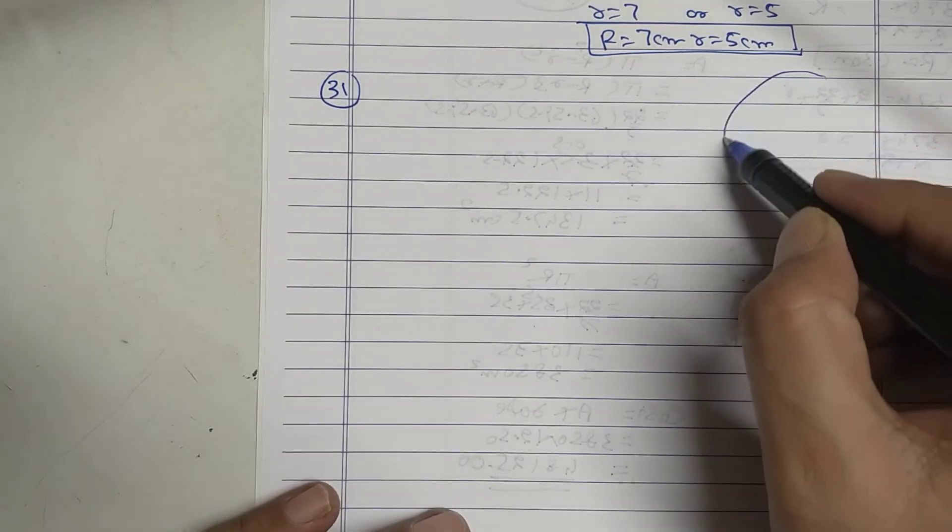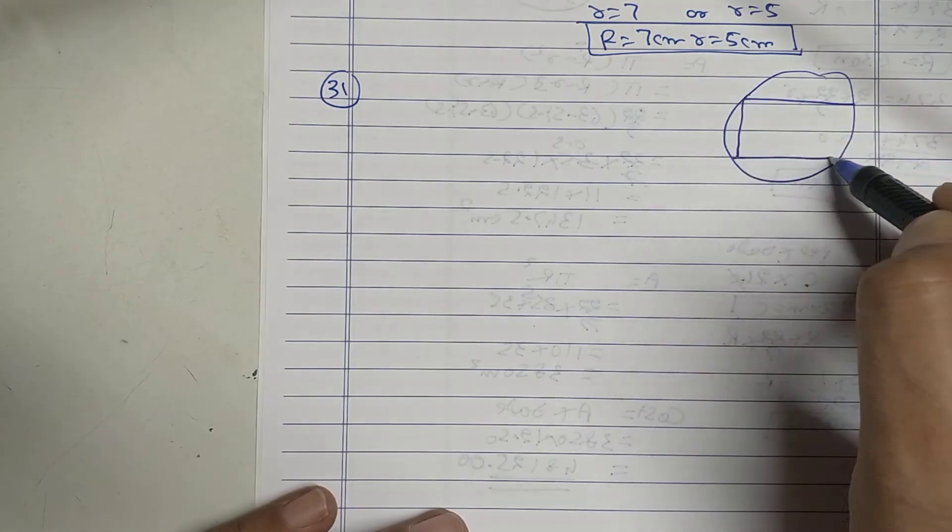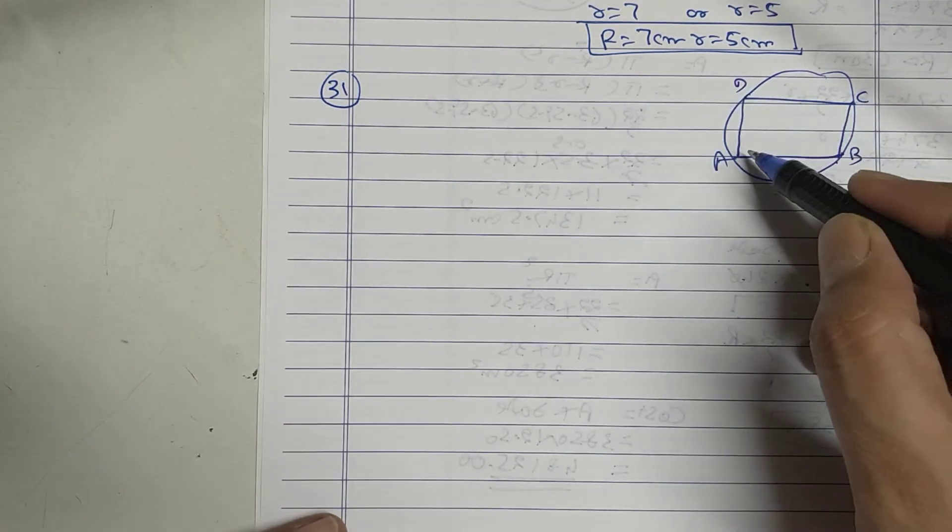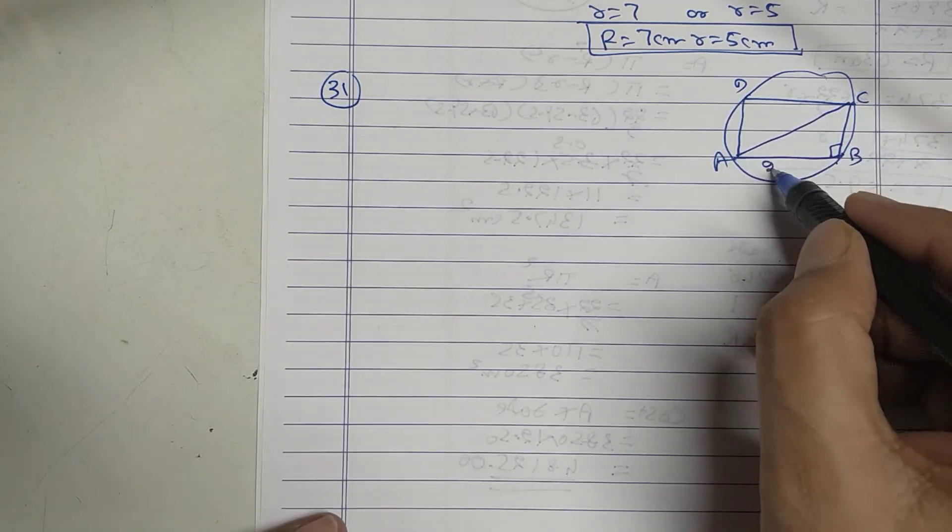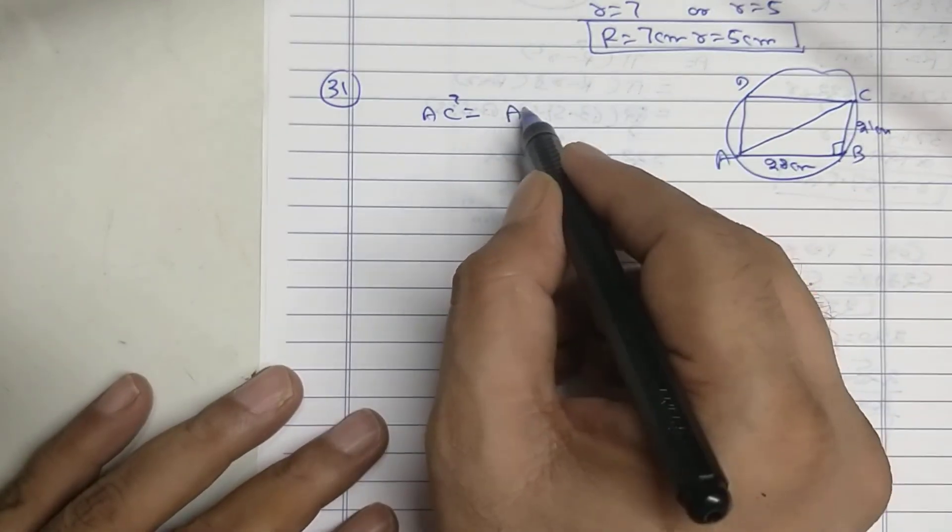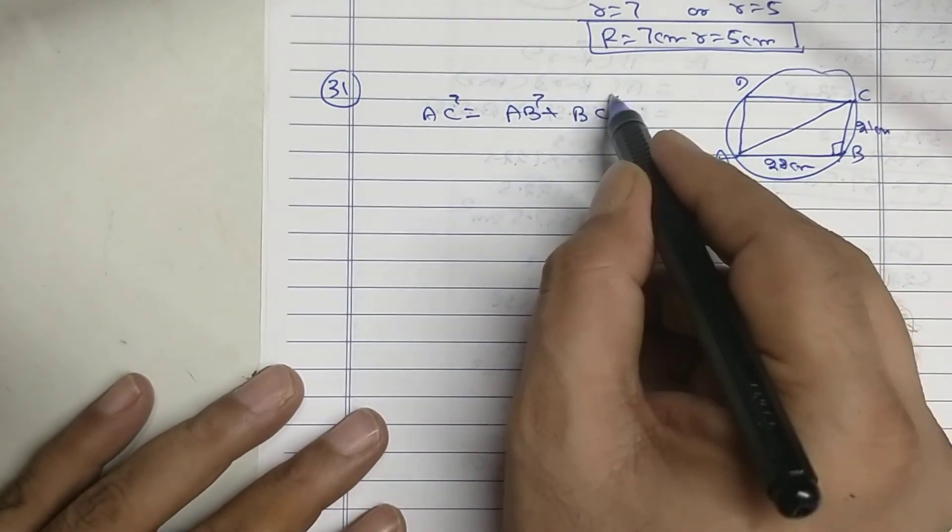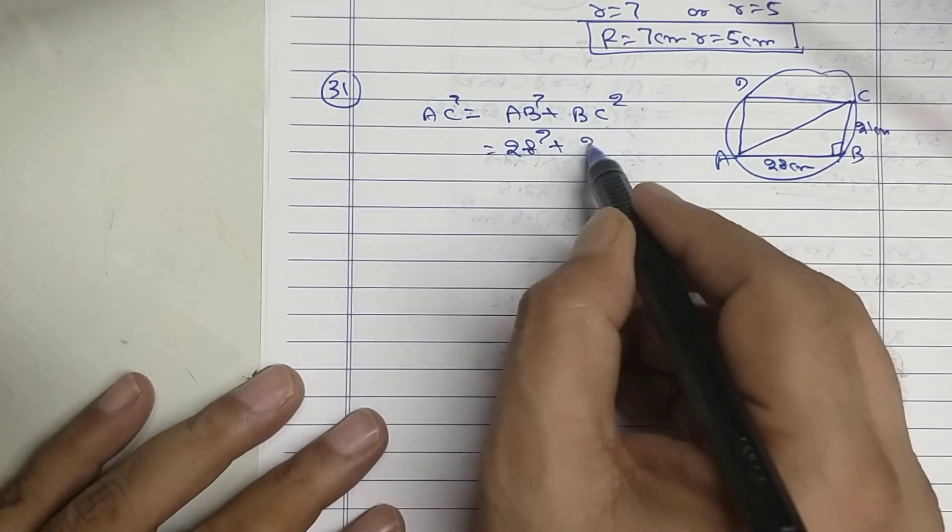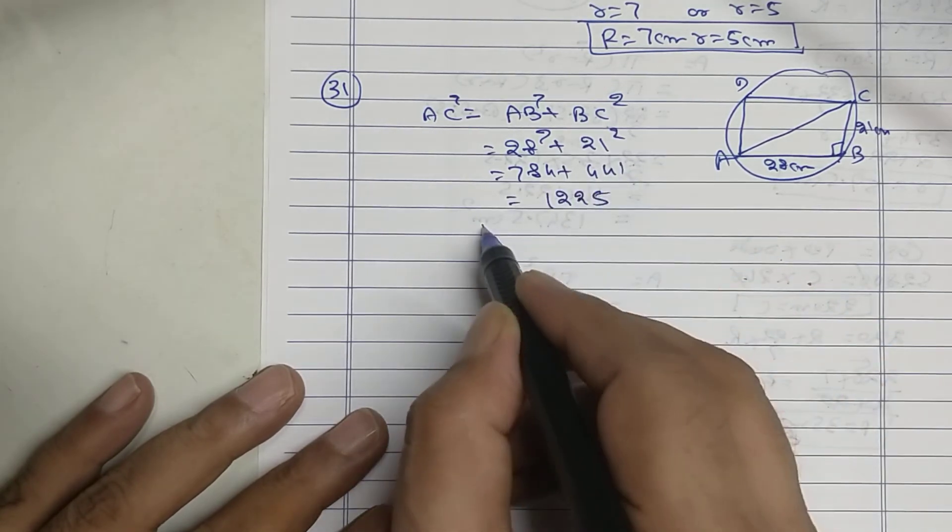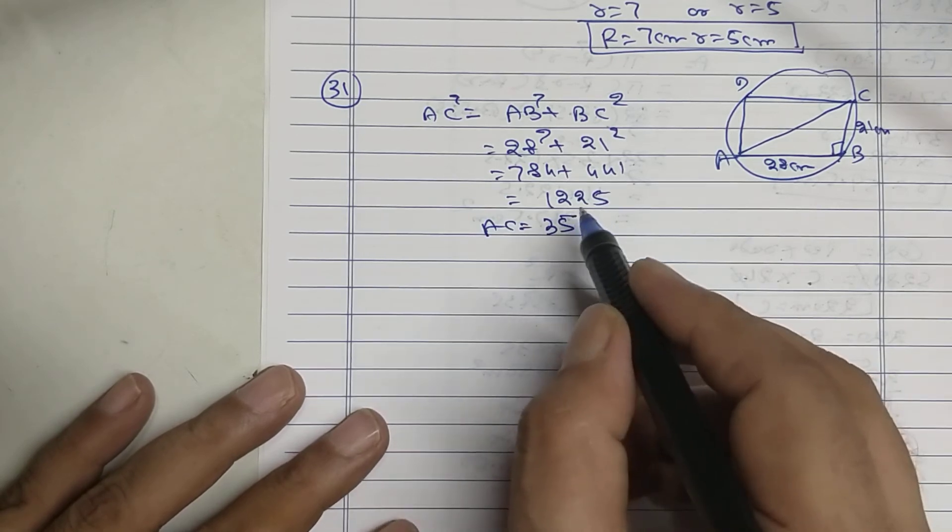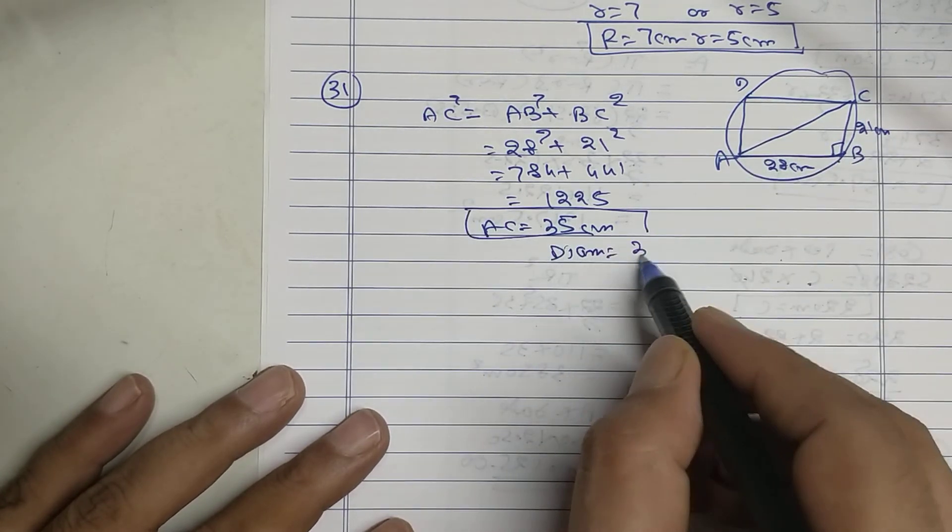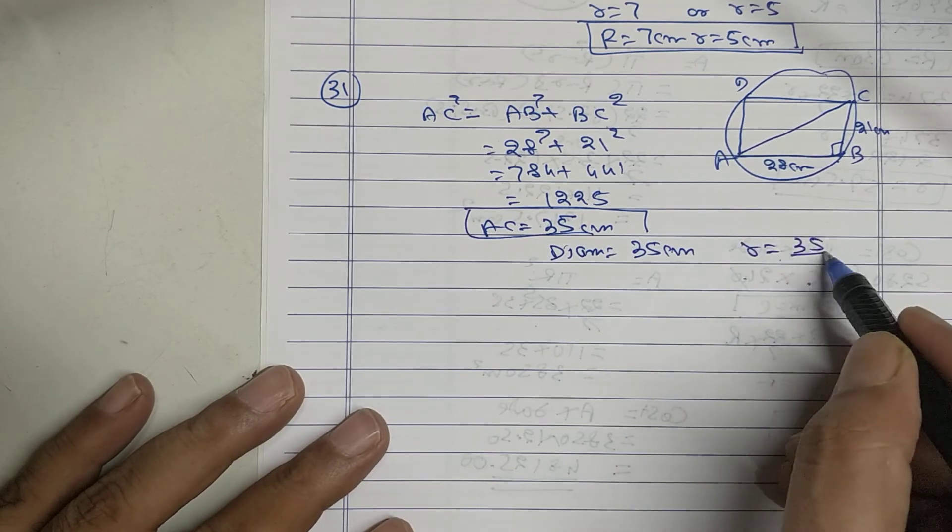You see the figure. ABCT is a rectangle. This is 28 centimeter, this is 21 centimeter. First by Pythagoras: AC square equals AB square plus BC square. 28 square plus 21 square, 784 plus 441 equals 1225. AC equal to 35 centimeter. Means diameter is 35 centimeter, so radius is 35 upon 2 centimeter.